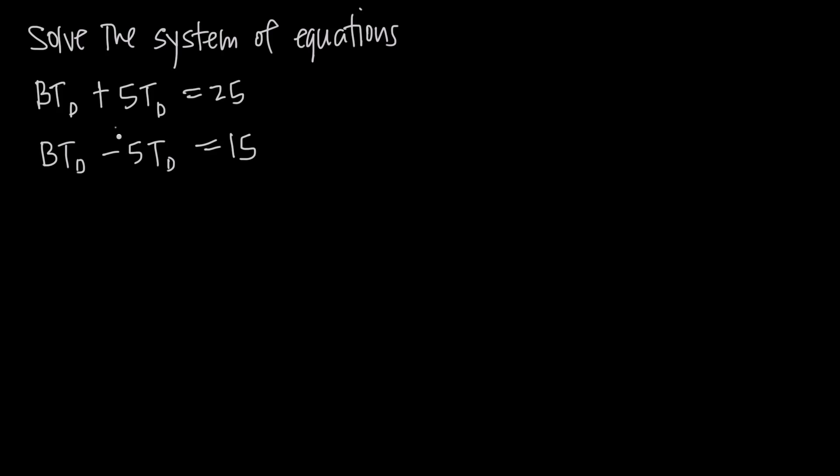In fact, if you wanted to, you could rename these. You could say that BT sub D is going to be equal to A. So for example, let's say BT sub D equals A, and let's say that T sub D equals B.